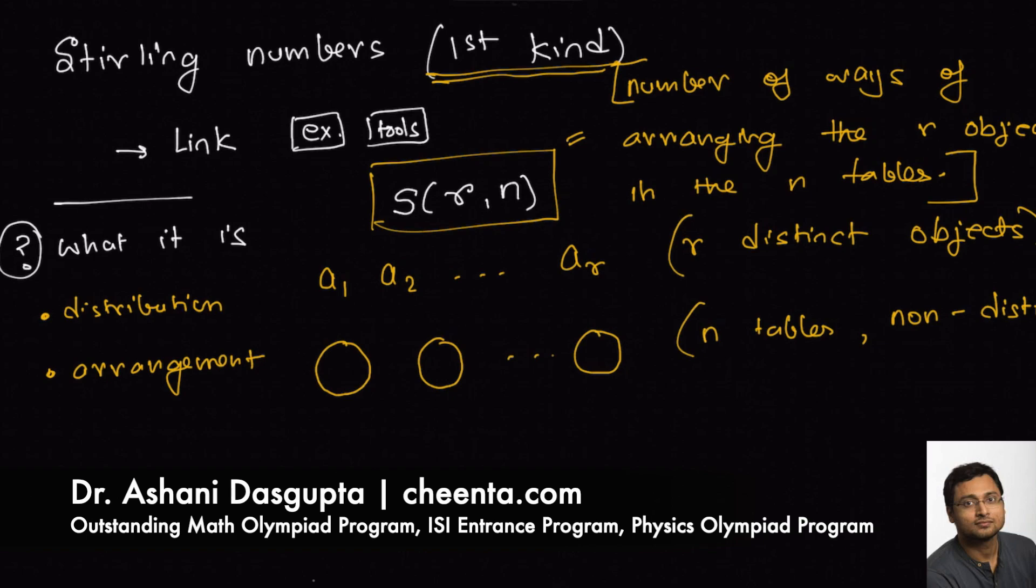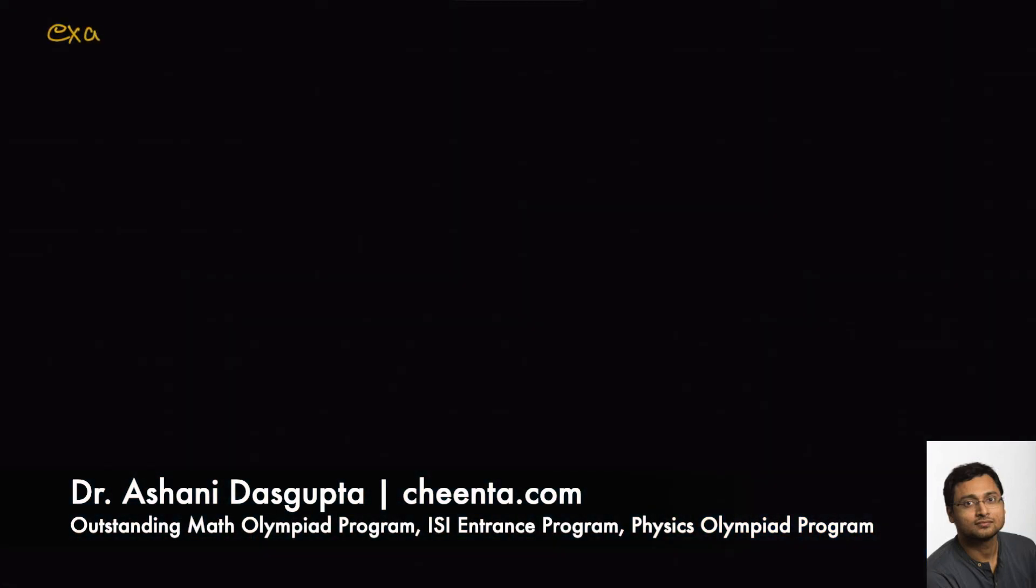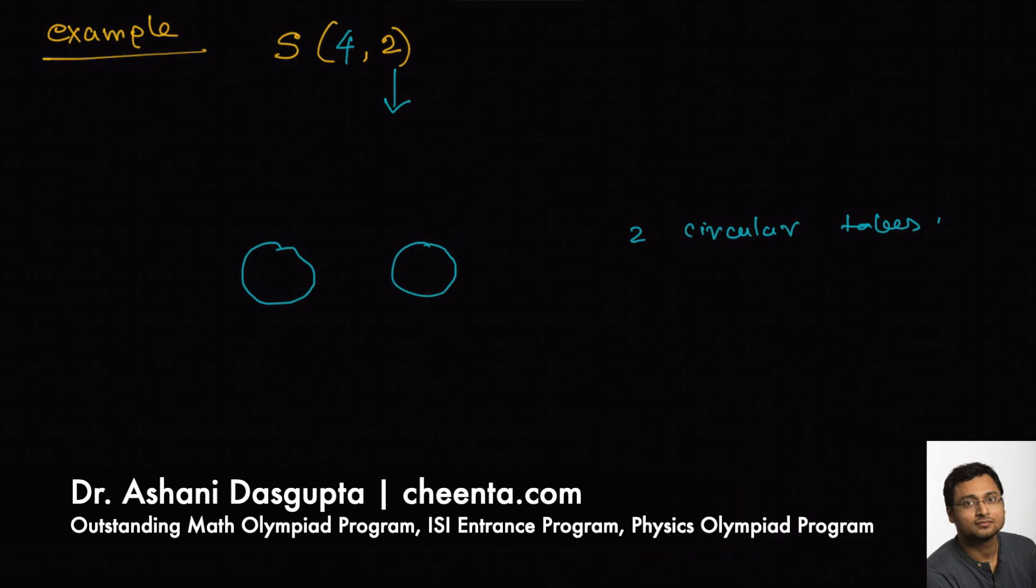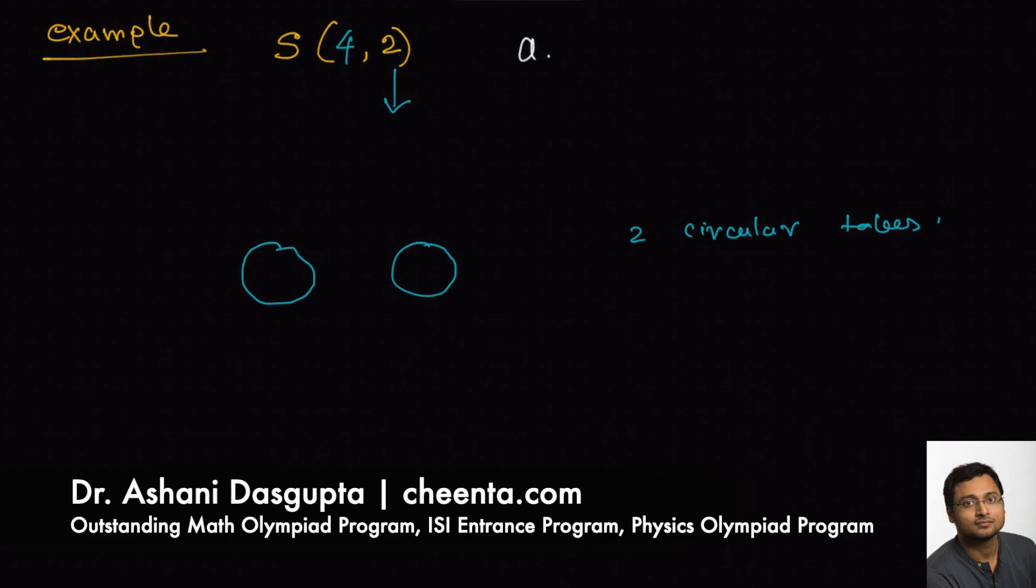Let's take an example. What is S(6,2)? Actually, let's do an even easier case, S(4,2). It will be simpler. There are four objects: a₁, a₂, a₃, a₄. The question is, in how many ways can you distribute these four objects around these two tables and then arrange them?